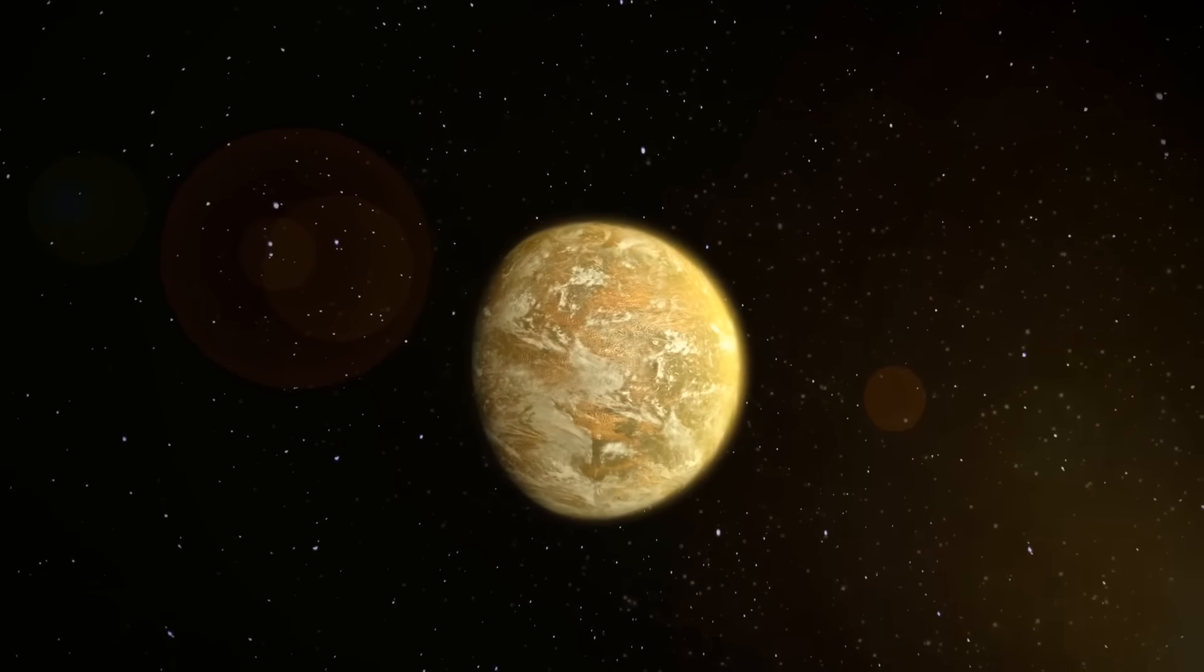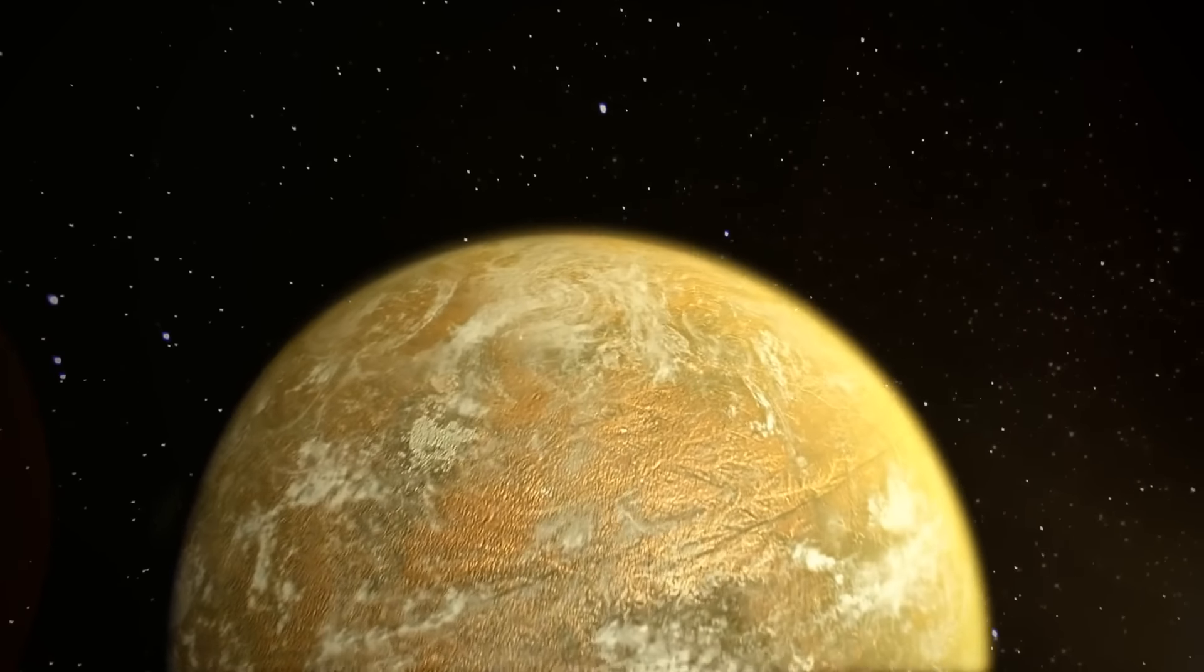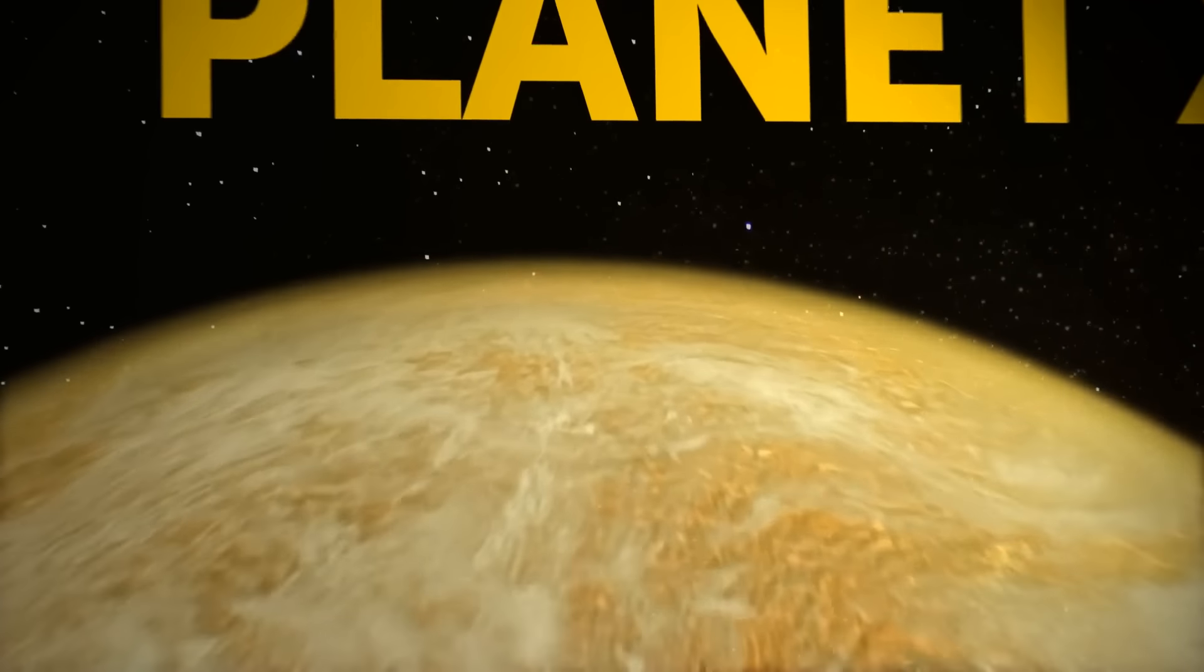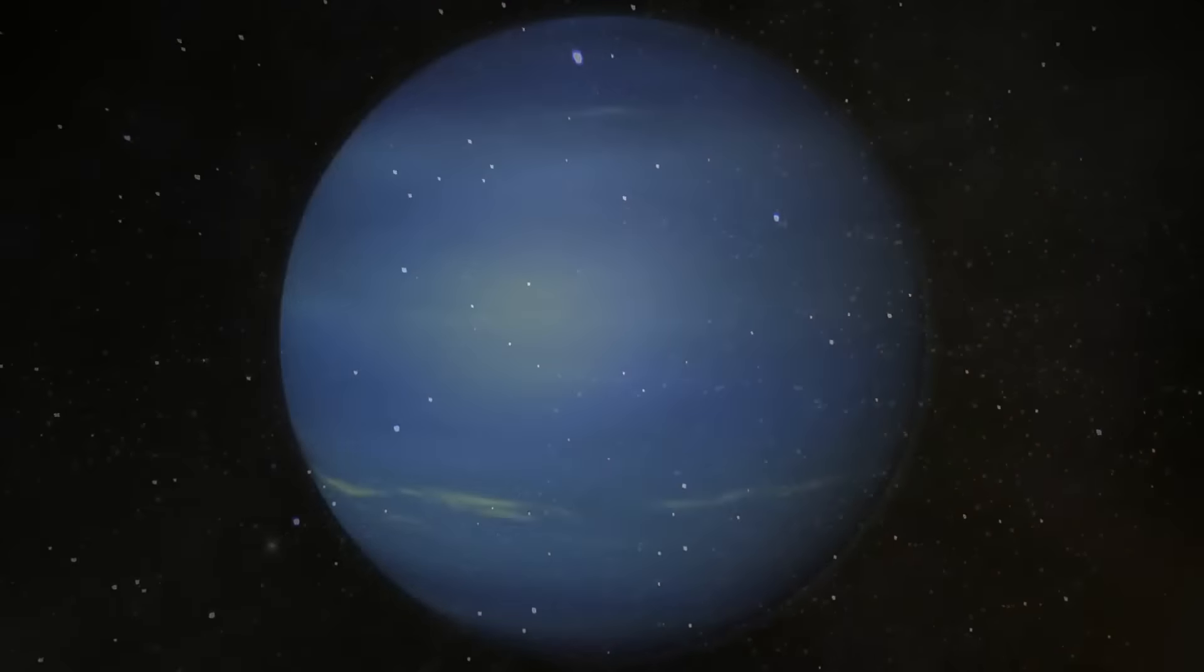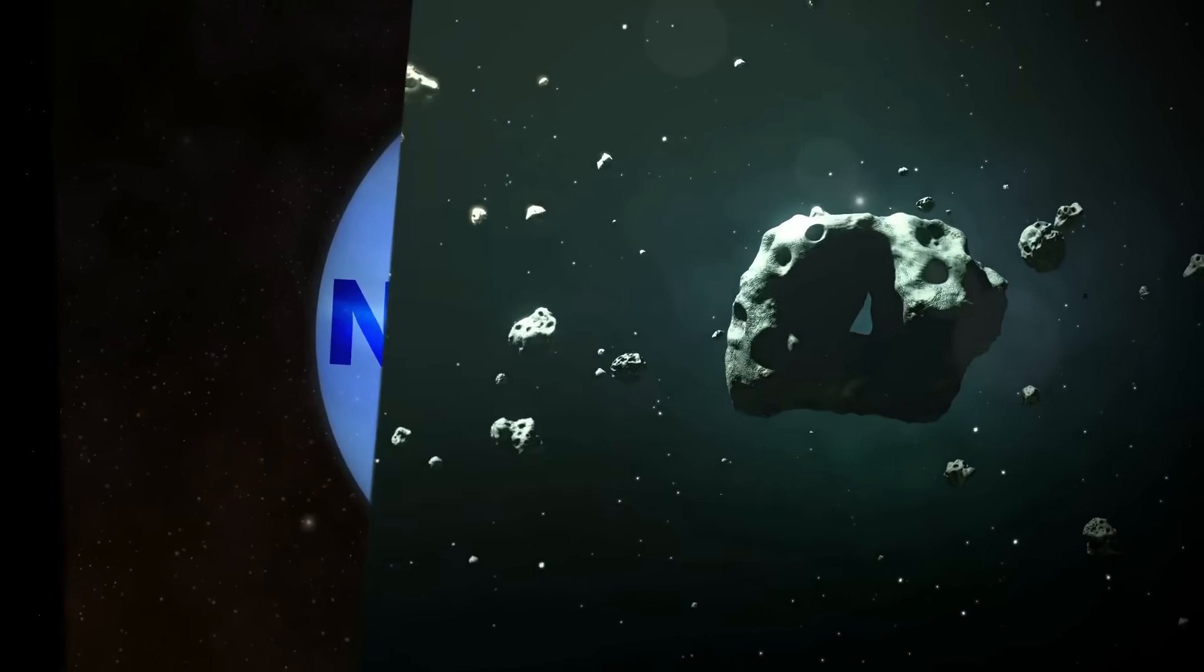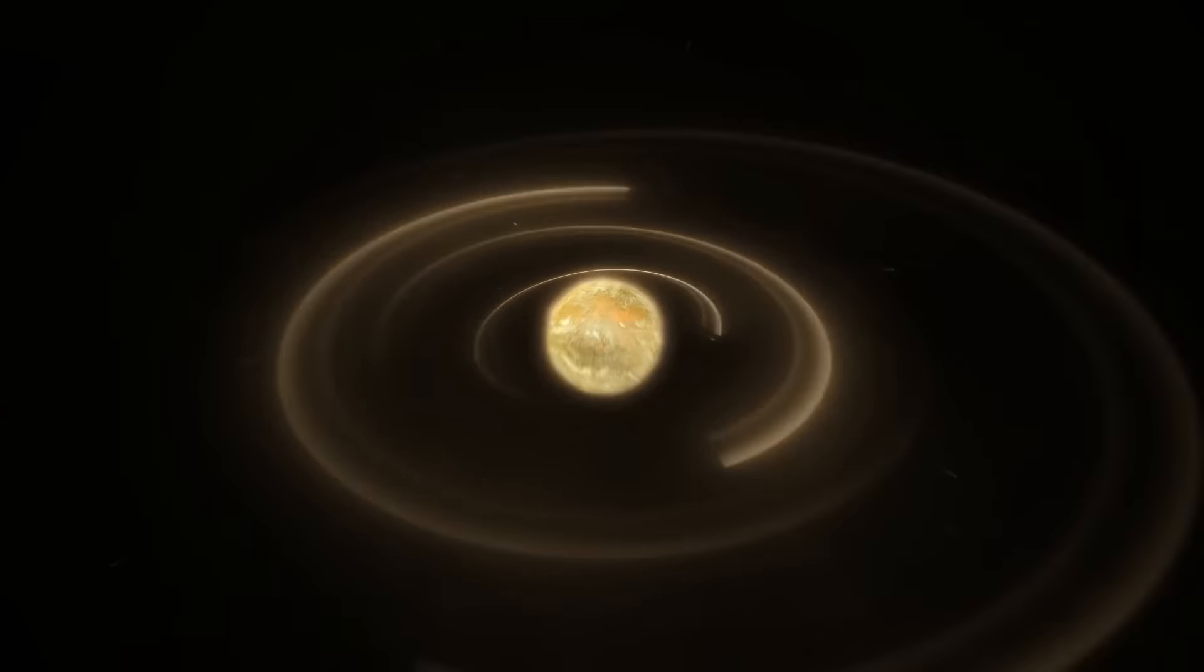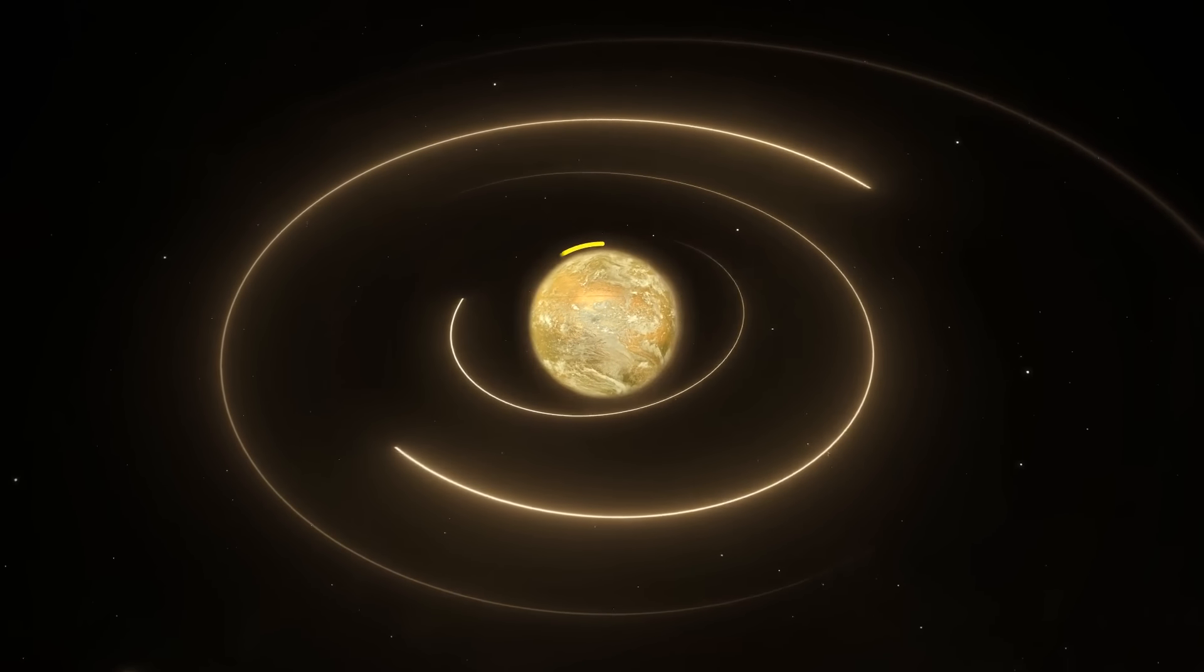So much so that there's speculation that there might be one more planet in our solar system. Scientists call it Planet X or Planet 9. This undiscovered world could be hidden way out past Neptune. Asteroids and dwarf planets in this area have weirdly unexplained altered orbits, and Planet X may be the reason.